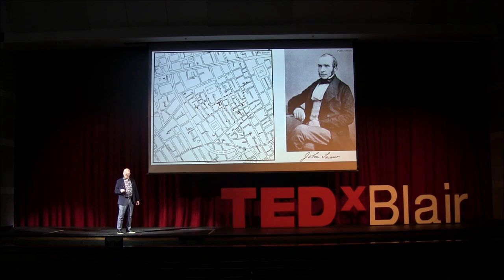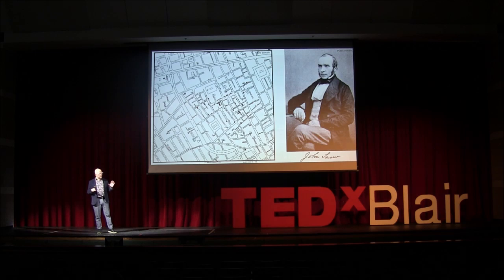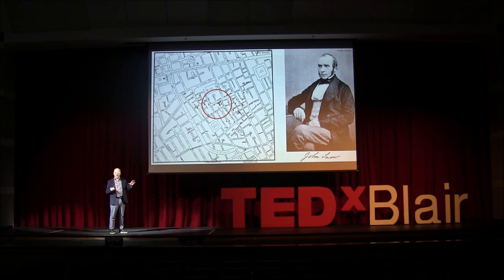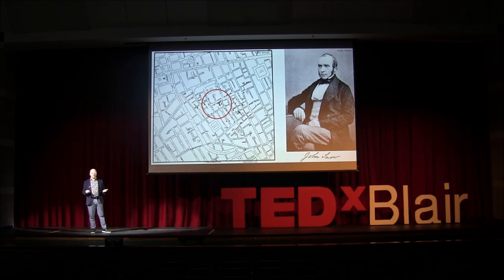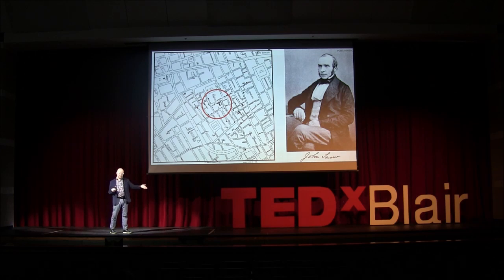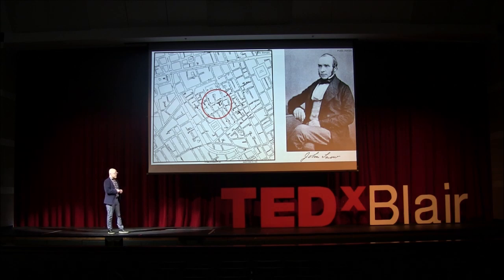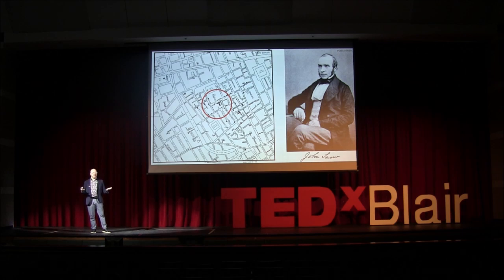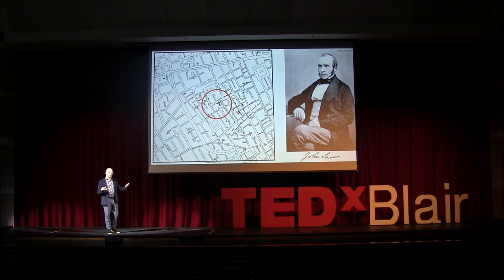Each of the black bars you see represents one victim of the cholera outbreak. And if you squint your eyes and look real hard, you'll see, as John Snow did, that there is a concentration of cholera outbreak victims around Broad Street, and in particular around a pump called the Broad Street pump. So John Snow walked down to that pump, put a lock on it, and the disease just subsided. This is an example — and not the first in history — of using visuals to understand data more efficiently than using numbers or text.